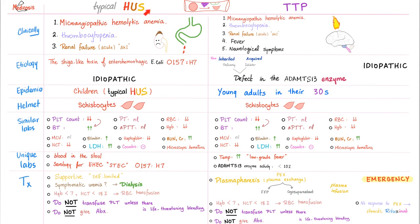Comparing typical HUS and TTP: HUS is a triad; TTP is a pentad — don't forget fever and neurological symptoms. Both are technically idiopathic, but the most likely cause of HUS is the Shiga-like toxin of E. coli O157:H7, and for TTP it is a defect in ADAMTS13. HUS affects children; TTP affects young adults. Schistocytes are found in both. Blood in stool is only in typical HUS. Screening for E. coli O157:H7 is only useful for HUS. Unique to TTP: elevated temperature, ADAMTS13 activity less than 10%, and acute mental status changes.